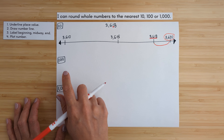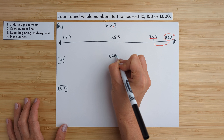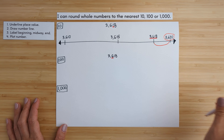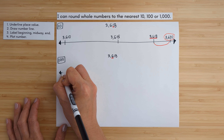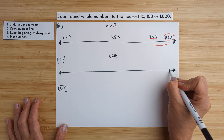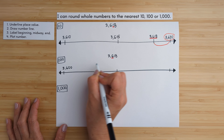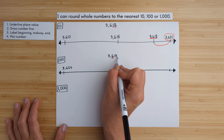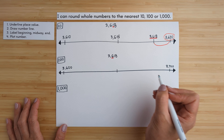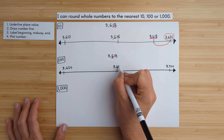Now let's round to the nearest hundred. We write out the same number, 3,618, and follow the same steps. We underline the hundreds place value. We draw a number line and label the beginning, end, and midway point. The beginning is 3,600 — the six stays the same. Then one more than the underlined place value gives us 3,700. The midway point between 3,600 and 3,700 is 3,650.